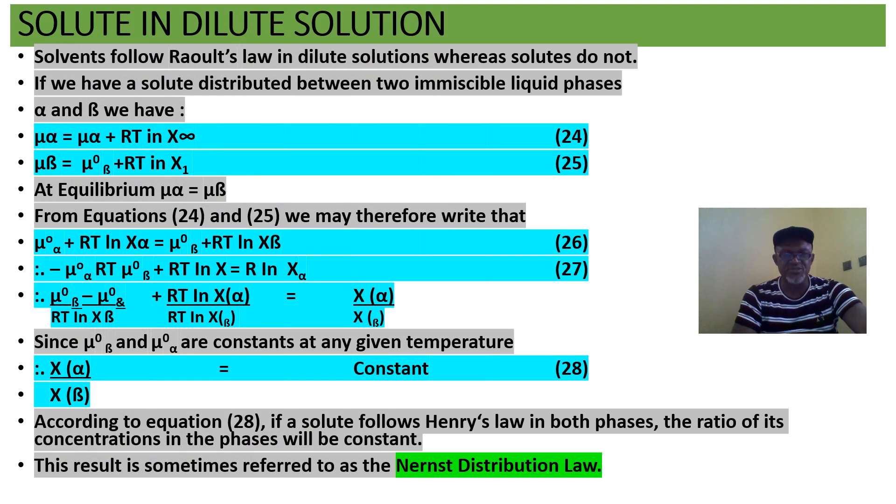Solute in dilute solution. This gives us Nernst distribution law or Henry's law. Now, solvents follow Raoult's law in dilute solution, whereas solutes do not. So we'll do the derivation again. When we want to distribute between two phases, alpha and beta, look at mu alpha is equal to mu naught alpha plus RT ln x. The same again for beta, that's equations 24 and 25. And at equilibrium, then mu alpha must be equal to mu beta. We equate the two, equations 24 and 25, and we'll get equation 26.